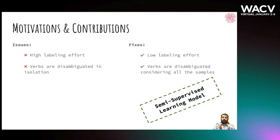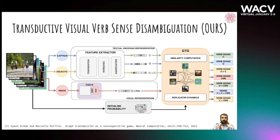Transductive semi-supervised learning relies on a small set of labelled points, hence reducing the labelling effort, and at the same time exploits similarities between all the samples, labelled and unlabelled, to get a better prediction. Our disambiguation method is built upon a graph-based transductive semi-supervised model named Graph Transduction Games, which takes as input a probability assignment between nodes and labels — in our case the senses — and pairwise similarities. The process iteratively refines such probabilities, considering node similarities until convergence.